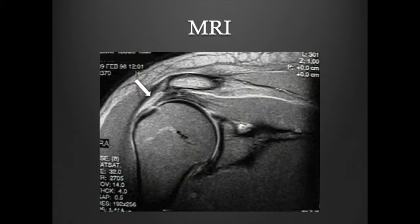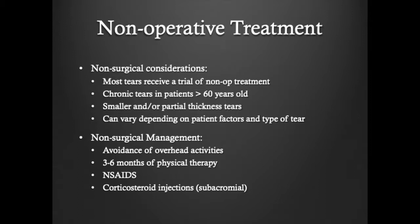When a patient is diagnosed with a rotator cuff tear, we typically first engage in non-operative treatment. This includes physical therapy, anti-inflammatories, as well as subacromial injections. However, the decision whether to pursue non-operative or operative care does depend on the tear characteristics as well as patient symptoms.